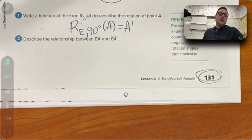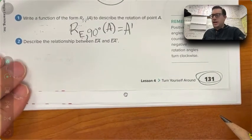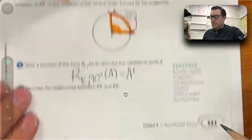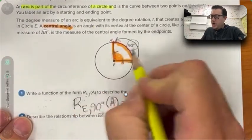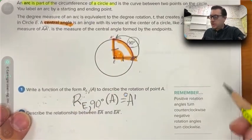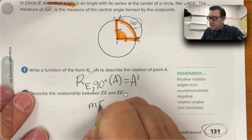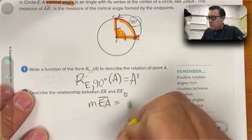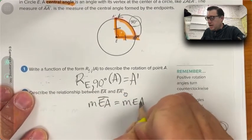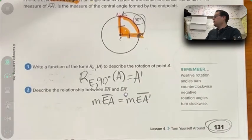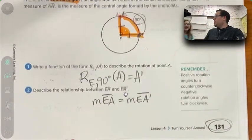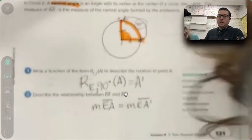Describe the relationship between EA and EA prime. Well, because they're actually radii on a circle, they're the exact same length. So we can say the measure of EA equals the measure of EA prime.